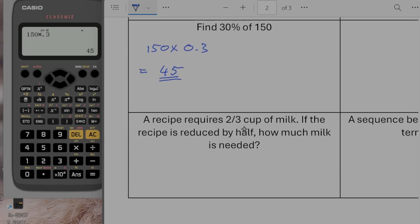A recipe requires two-thirds of a cup of milk. If the recipe is reduced by a half, how much milk is needed? So we want a half of two-thirds. So that would be one-third.